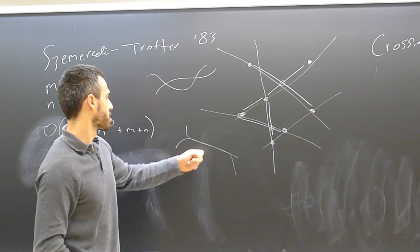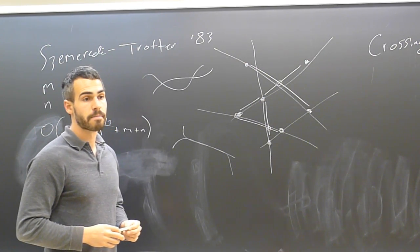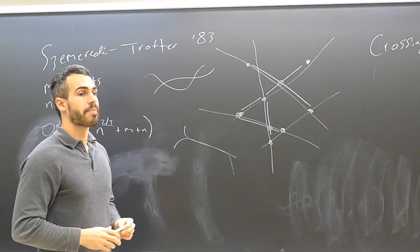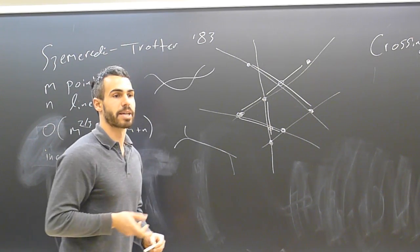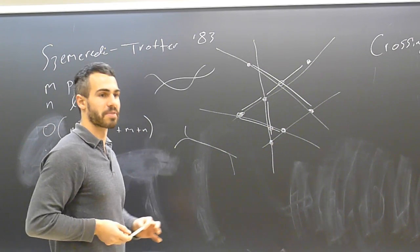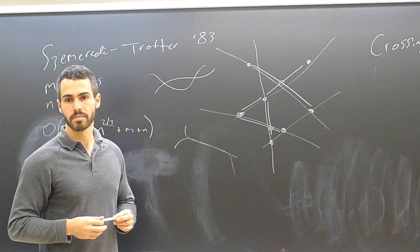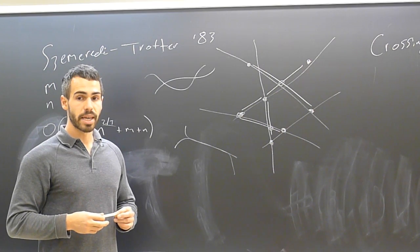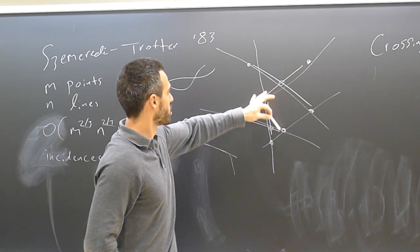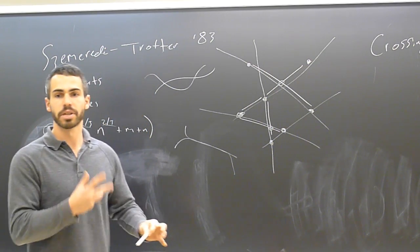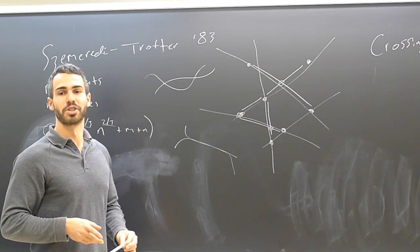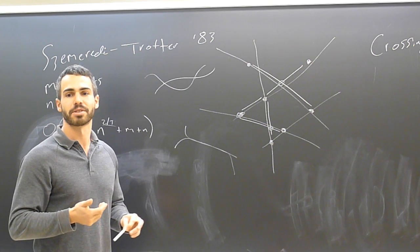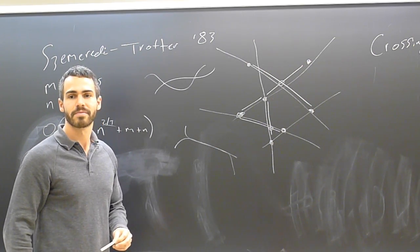If two edges cross twice, that counts as two crossings even for a single pair. Having infinitely many crossings is disallowed. An audience member asks about edges that oscillate — can they cross a fixed large number of times? Yes, in this purely topological setting that is allowed, and it only helps us: if every pair of edges crossed a thousand times, our bound would get better by a factor involving a thousand.